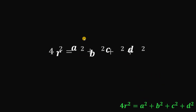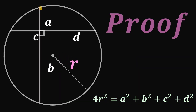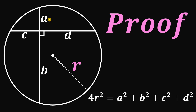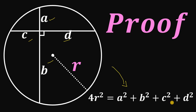There you go. Given perpendicular chords with segment lengths A, B, C, and D, we can find the radius R using this relationship: 4R squared equals A squared plus B squared plus C squared plus D squared. And as always, we are done.